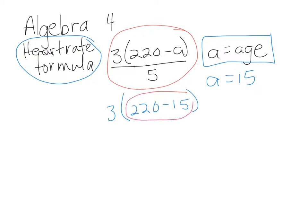Now we're going to order of operations, take care of what's inside here, and we get 3 times 205 divided by 5. Don't forget to divide by 5.